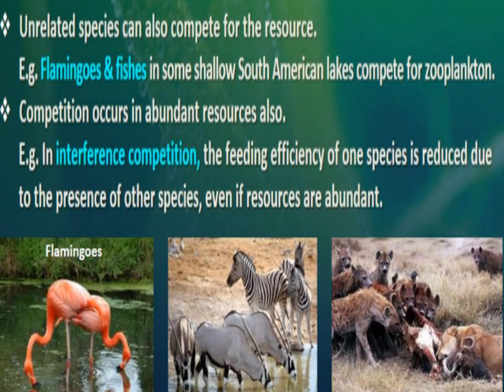Competition occurs even with abundant resources. In interference competition, the feeding efficiency of one species is reduced due to the presence of another species, even if resources are abundant. So even when there are enough resources, the feeding efficiency of one species is still reduced due to the presence of the other species.